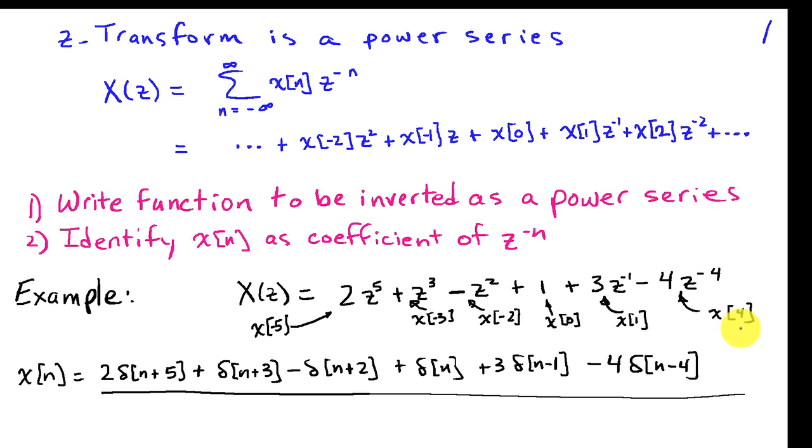Minus 4 will correspond to X of 4. So I can write out X of N as 2 delta of N plus 5 plus delta of N plus 3 minus delta of N plus 2 plus delta of N minus 3 delta of N minus 4.